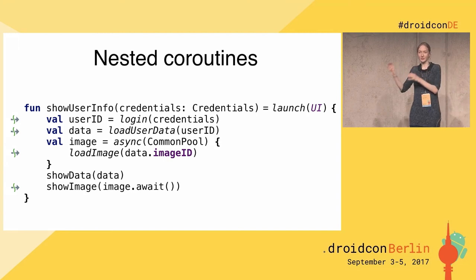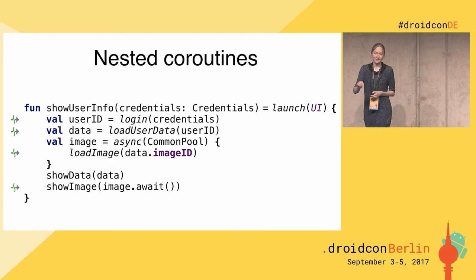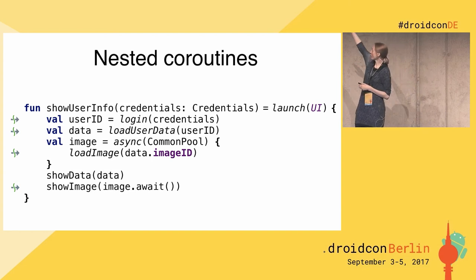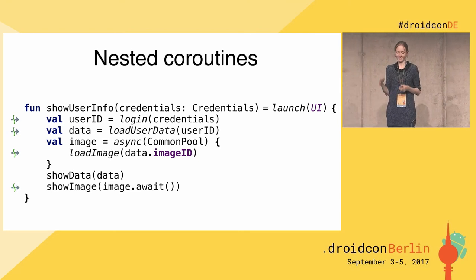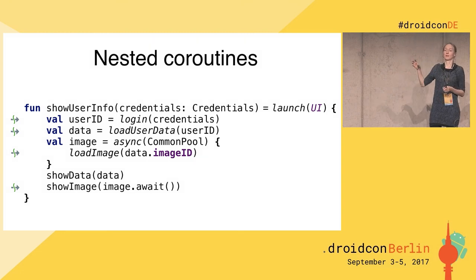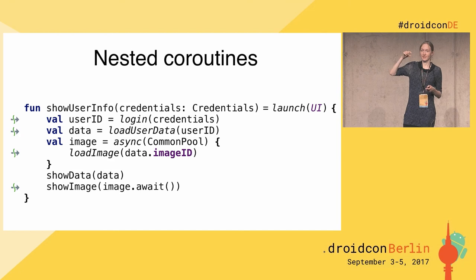In this example, I start `launch` — the first coroutine in the UI thread — and then `async` starts another coroutine inside the first one. You can see the arrow symbols in IntelliJ or Android Studio representing suspension points. They mark directly where your computation might be suspended — placed whenever you call a suspend function.